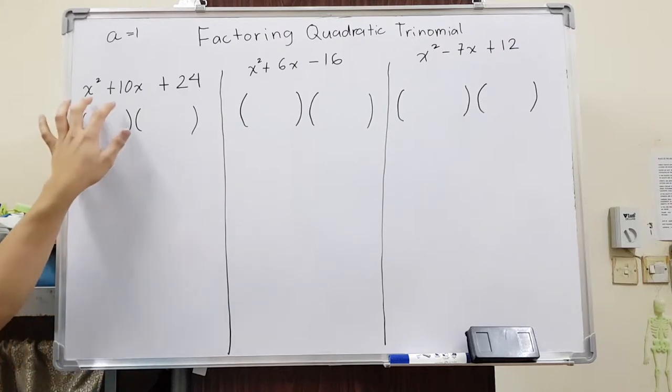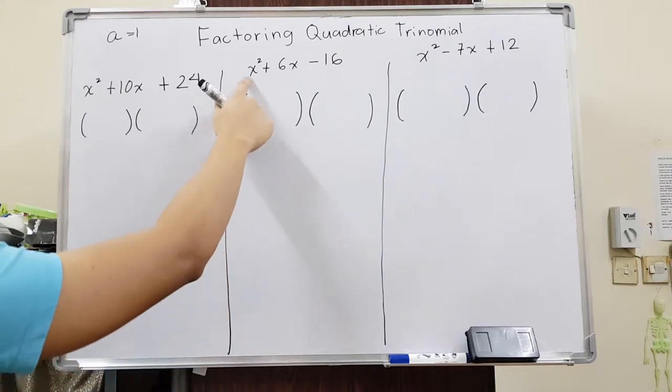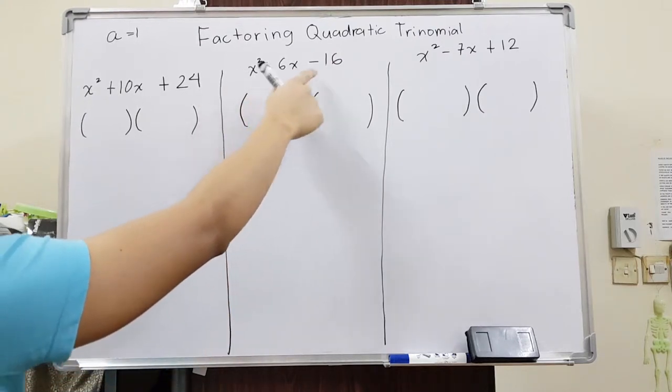When you say trinomial, we have three terms: one, two, three. Same thing goes for all of these. We have x squared, we have the one with an x, and the normal number.